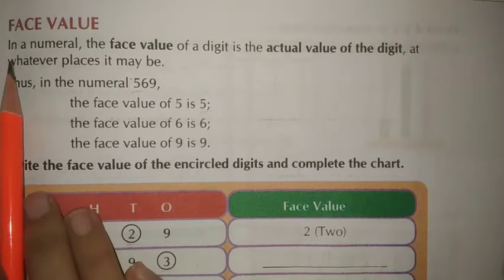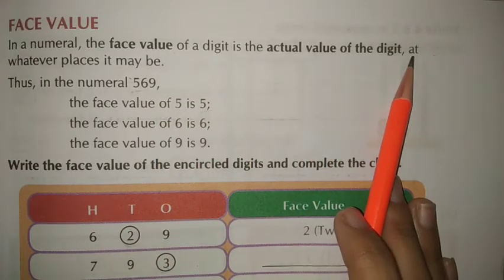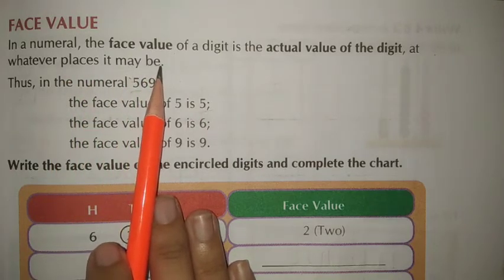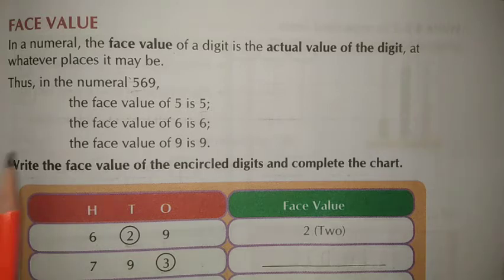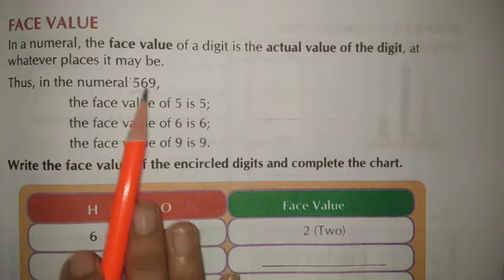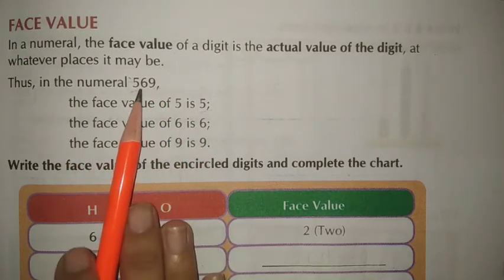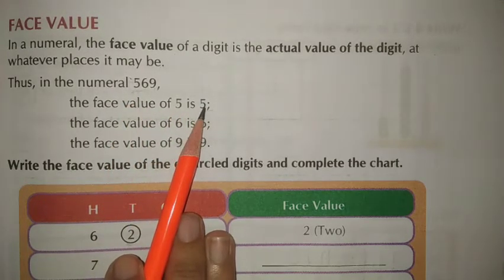Next is face value. In a numeral, the face value of a digit is the actual value of the digit, at whatever place it may be. It does not depend on its position — it is always the actual digit value. For example, in 569: face value of 5 is 5, face value of 6 is 6, and face value of 9 is 9.